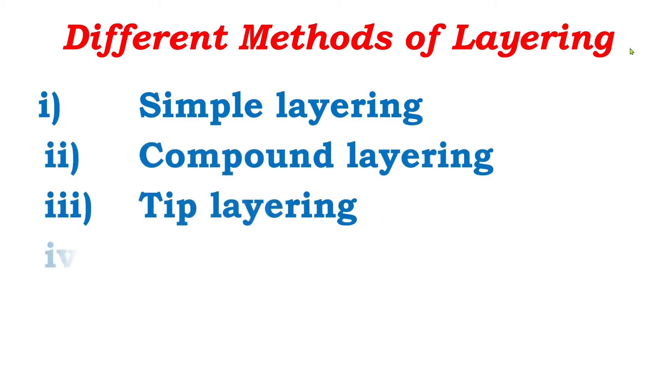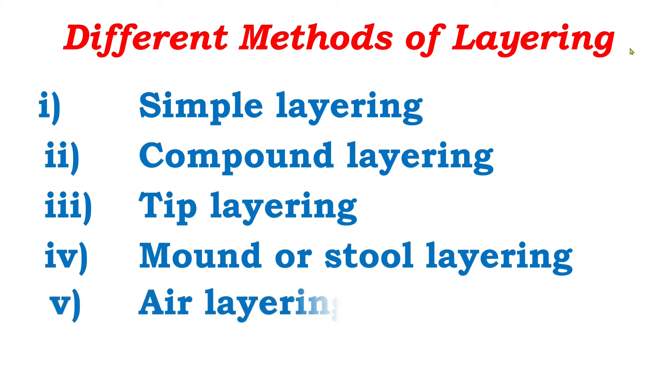Different methods of layering. There are five major methods of layering: one is simple layering, second compound layering, third tip layering, fourth mound or stool layering, and fifth one air layering.